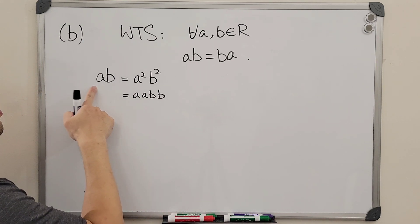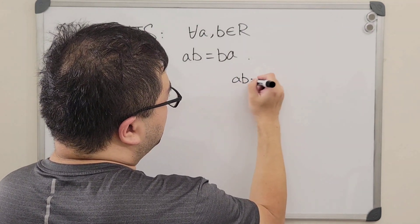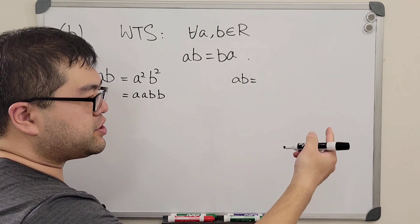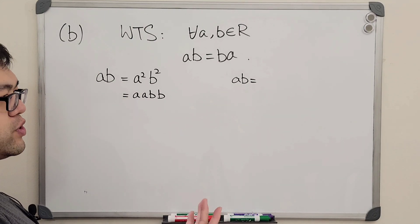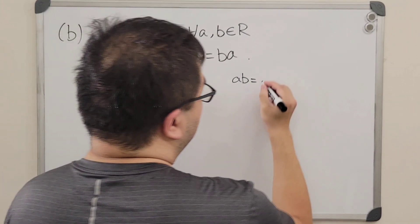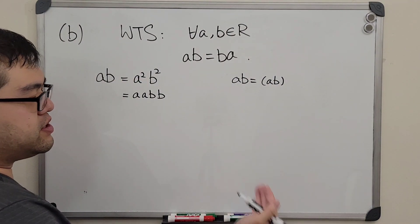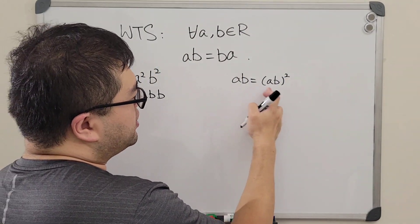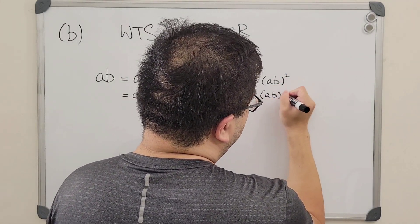But now we're going to trace back and see what ab could also be. Now on the other side, ab based on our condition, since a and b are both elements in the ring, the product a times b is of course also an element in the ring. Then with the condition that for all elements the square of the element is equal to the element itself, we get that ab is actually equal to the square of the quantity ab, which means that we have ab times ab on the right hand side.